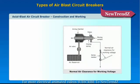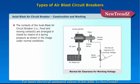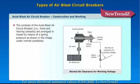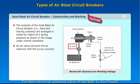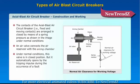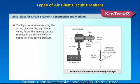Axial blast air circuit breaker construction and working. The contacts of the axial blast air circuit breaker — fixed and moving contacts — are arranged and closed by means of spring pressure, as shown in the image, under normal conditions. An air valve connects the air reservoir with the arcing chamber. Under normal conditions this valve is in the closed position, but it automatically opens by the tripping impulse during the occurrence of a fault. The high pressure air entering the arcing chamber through the air valve forces the moving contact to move in a direction opposite to the spring pressure.